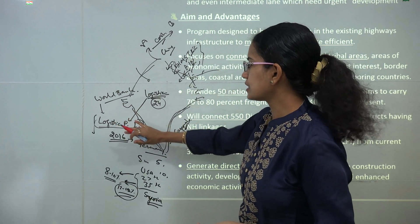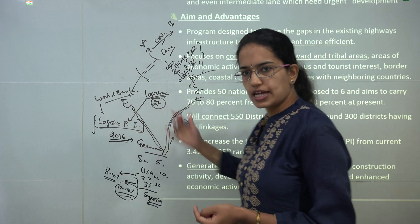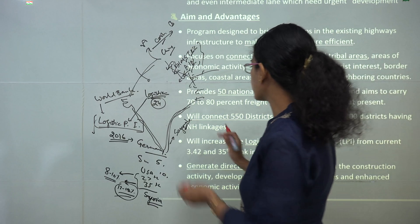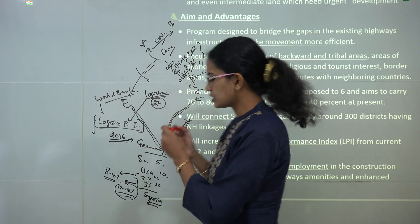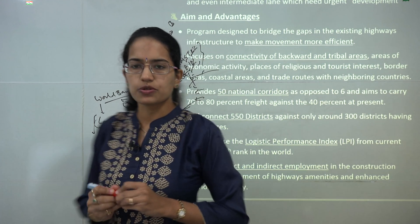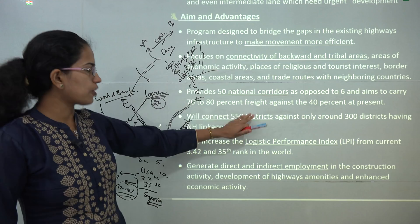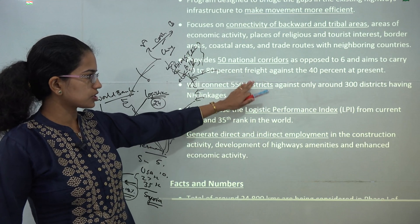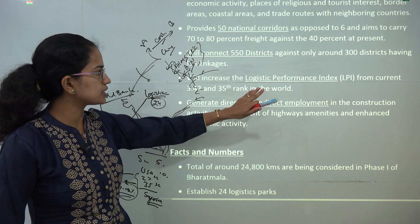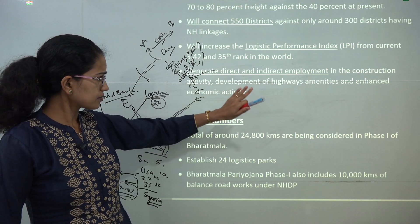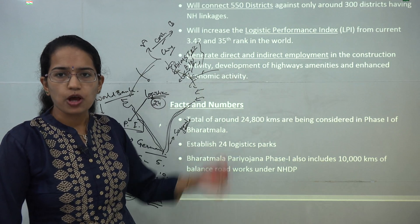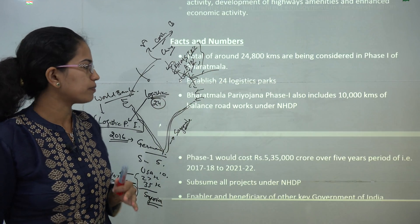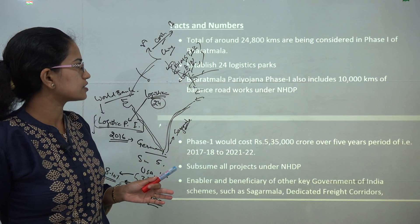The LPI is based on six parameters that we would study as we move forward. We have already talked about the development of national corridors, connection of various districts, and the direct and indirect employment that would be generated through this project.